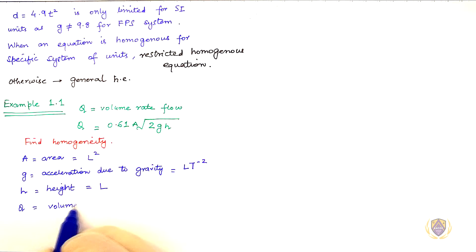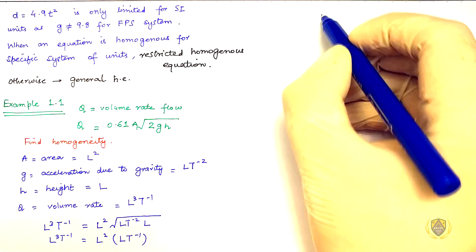Q is volume rate L cube T minus 1. So analyzing we get, L cube T minus 1 equals L square root of L T minus 2 L. Thus the equation is dimensionally homogenous.